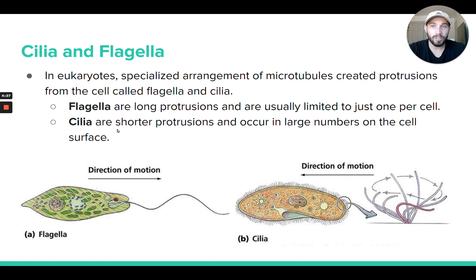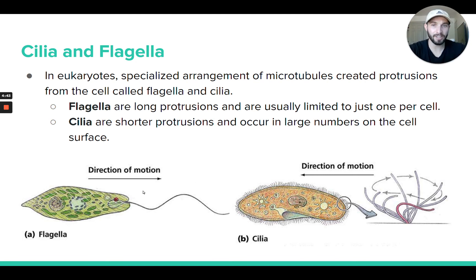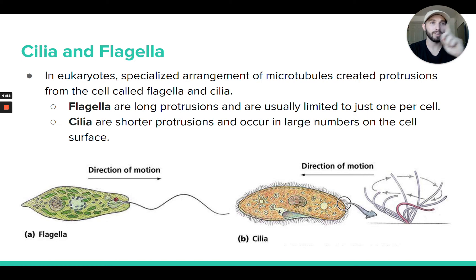Then there's these shorter protrusions called cilia. Cilia are these hair-like structures that look like fuzzy little hairs surrounding a cell. These are also protrusions of the cell, but they're a lot shorter, and this is also created because of the cytoskeleton — those protein fibers are what's extending out and forming these structures. Cilia are usually way more numerous and they cover usually a huge portion of the cell. They also have to do with movement — they whip around just like the flagella.